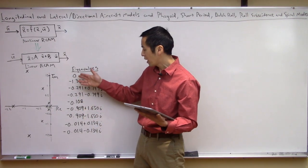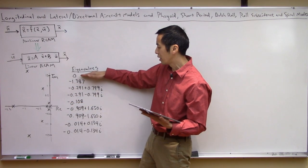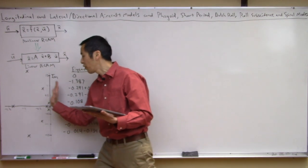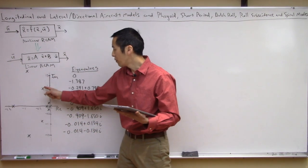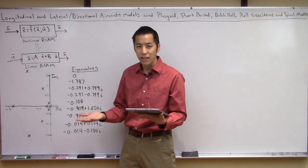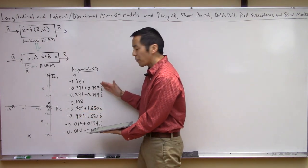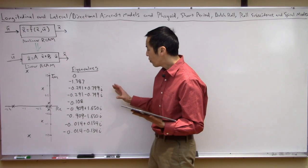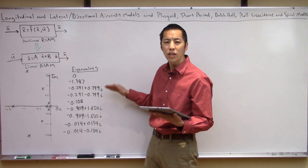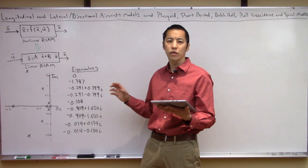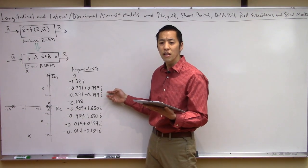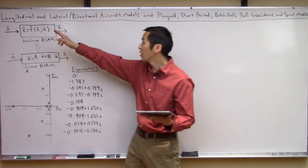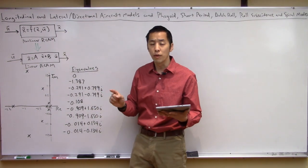I drew a pole zero map of where these eigenvalues lie. Everything is in the left half plane, although some are oscillatory. The reason we want to investigate this is that these eigenvalues really tell you what the linear system is going to do — how it's going to behave. We want to gather more insight: are there some physical characteristics or physical meaning of how these manifest themselves in the aircraft in terms of aircraft response? So the game plan is to develop a longitudinal model and a separate lateral directional model.